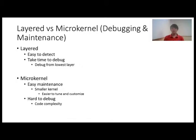For debugging and maintenance: the layer approach makes it easy to detect bugs but takes time to debug, because debugging starts from the lowest level and looks for bugs layer by layer. For micro kernel, it is easy to maintain because it has a smaller kernel that is easier to tune and customize, but it is hard to debug because of its very complex source code.